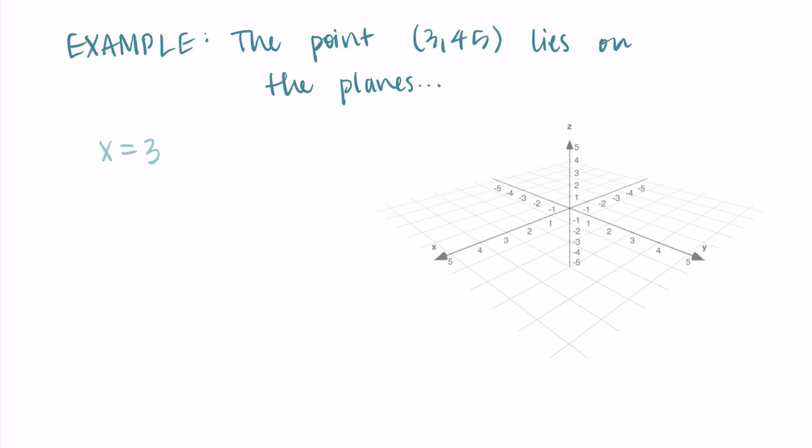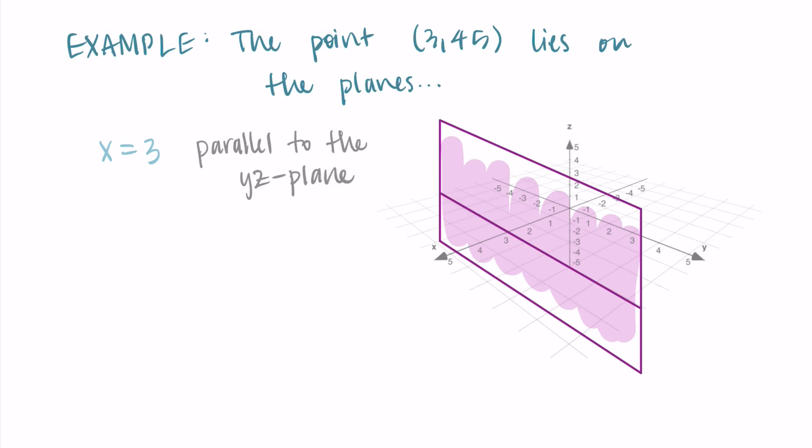So we can start by looking at what happens when x equals 3. So this plane is going to be parallel to the yz plane. I'll do my best to draw it here. So we look at three on the x, and then we have this sort of vertical plane coming out in the way I have graphed it. So the point (3, 4, 5) is going to be on this plane because it has an x value of 3. And this is the plane x equals 3.